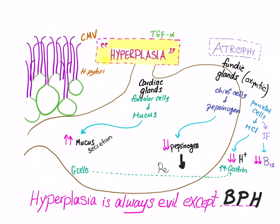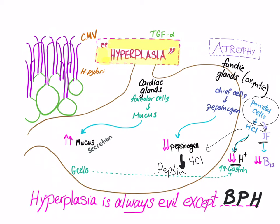This conversion happens with the help of HCl. Also, the parietal cells are getting knocked off, so hydrochloric acid will decrease, leading to decreased hydrogen ions and a decrease in intrinsic factor, leading to malabsorption of vitamin B12.